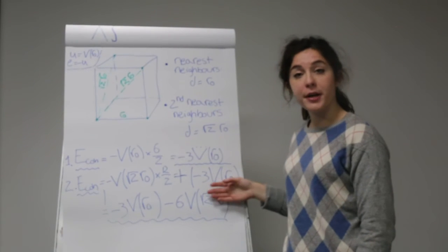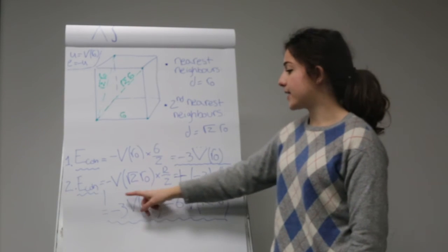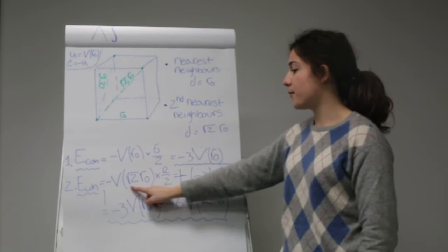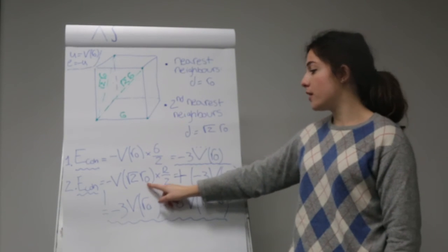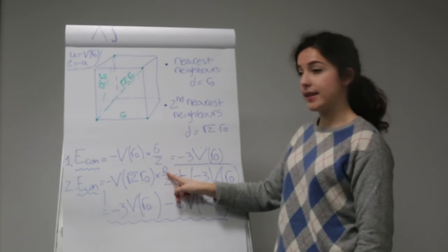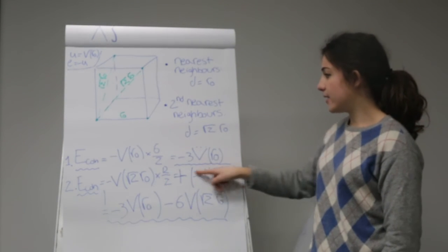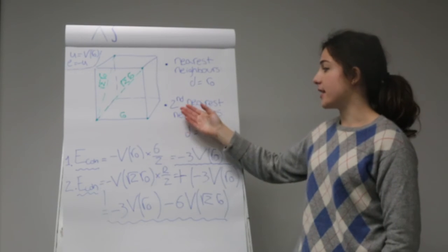So that gives us minus 3V of R0. If we have a stronger interaction that affects the second nearest neighbors as well, then we need to take account of the potential energy at the second nearest neighbors' distance R2 of R0, times the number of nearest neighbors, which is 12 in this case, divided by 2, because each bond is shared, plus the cohesive energy due to the first nearest neighbors.